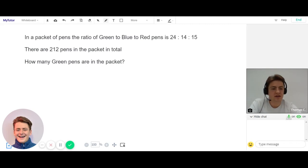Here we have a pretty standard GCSE maths question on ratios. First, we're going to start by reading the question really carefully. In a packet of pens, the ratio of green to blue to red pens is 24:14:15. There are 212 pens in the packet in total. How many green pens are there in the packet?